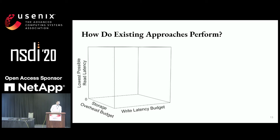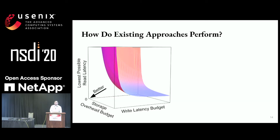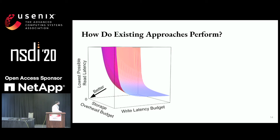We can then consider all possible sets of data sites and any other configuration parameters, finding which one gives us the lowest possible read latency given those two budgets. We can compute a trade-off curve in this three-dimensional space. As we increase our write latency budget, we expect read latency to improve. As we increase our storage overhead budget, we also expect read latency to improve. Anything closer to the origin is better.